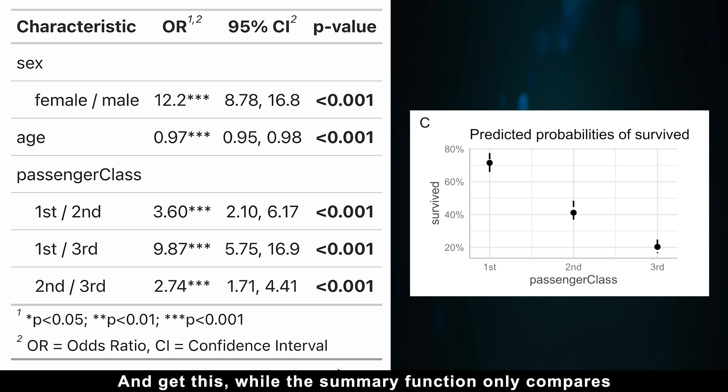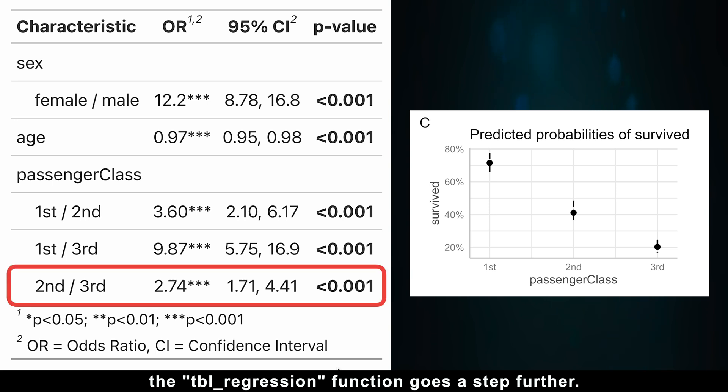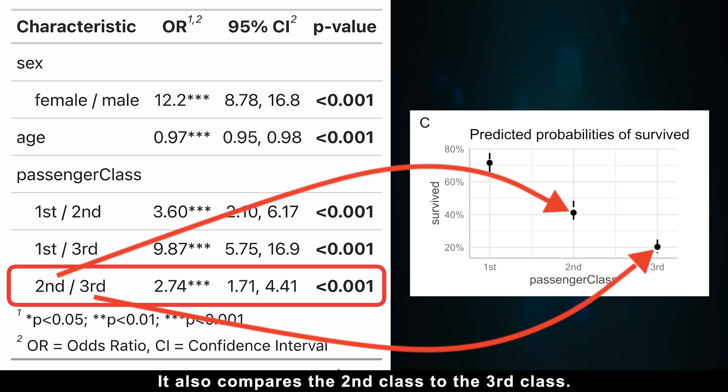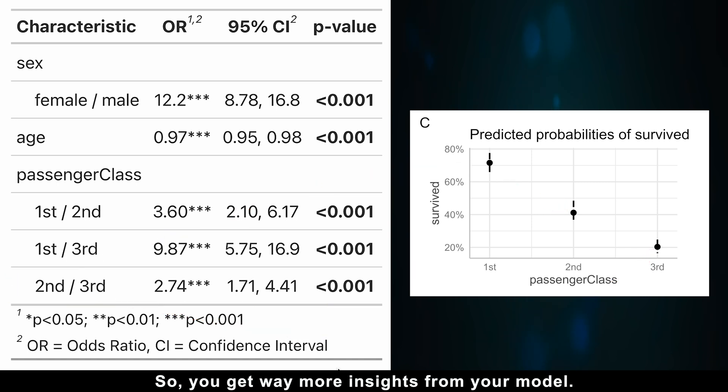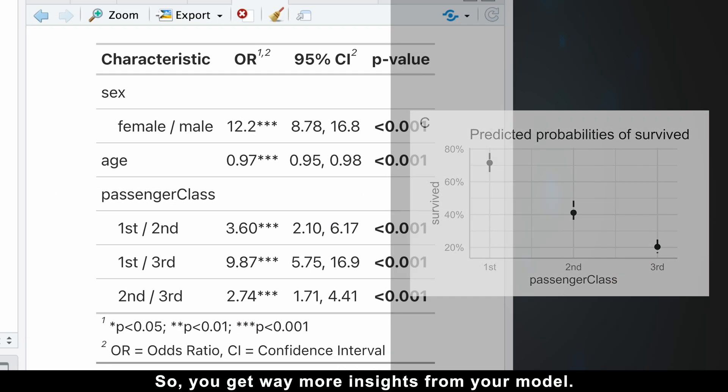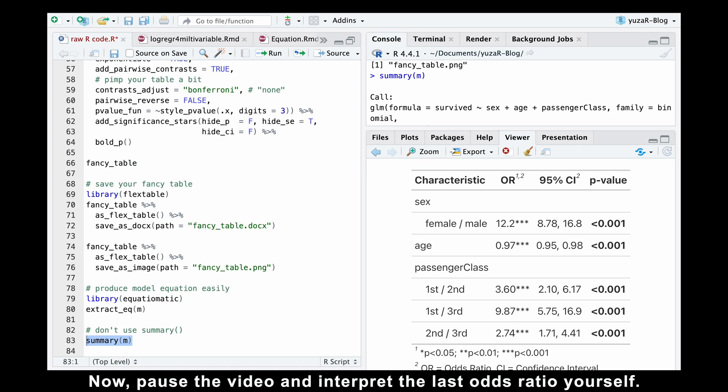And get this, while the summary function only compares the 2nd and 3rd classes to the reference 1st class, the tbl_regression function goes a step further. It also compares the 2nd class to the 3rd class. So you get way more insights from your model. Now, please pause the video and interpret the last odds ratio yourself.